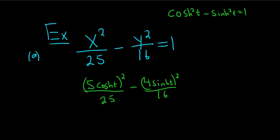And then you would square the 5, so you would get 25 cosh squared t over 25. You see why I picked the 5 now, right? So when you square it, it goes away. It's beautiful. Minus, and then when you square the 4, you get 16 sinh squared t.